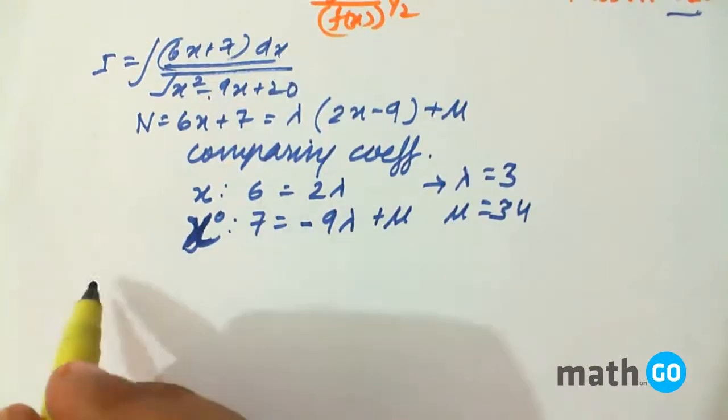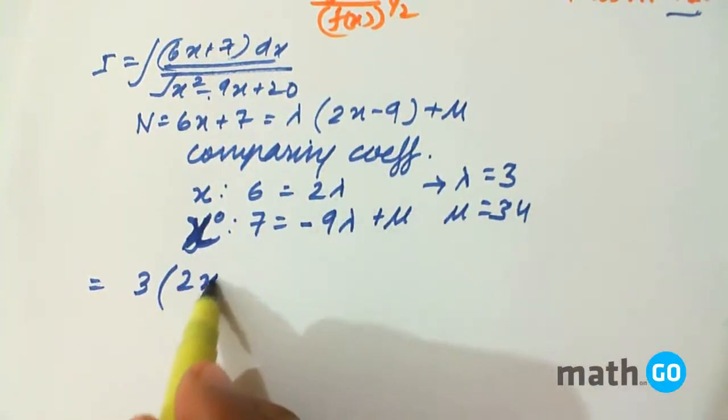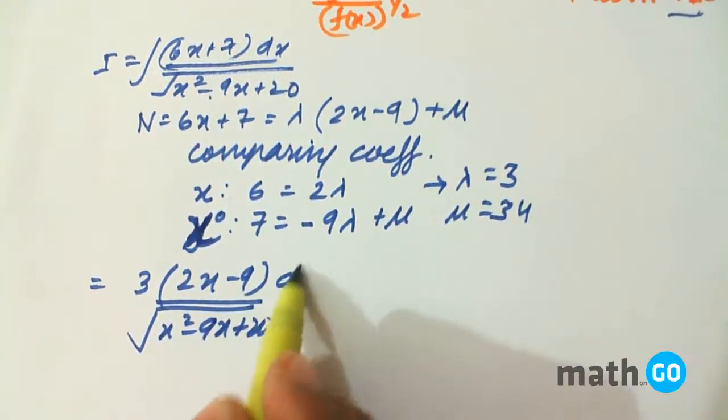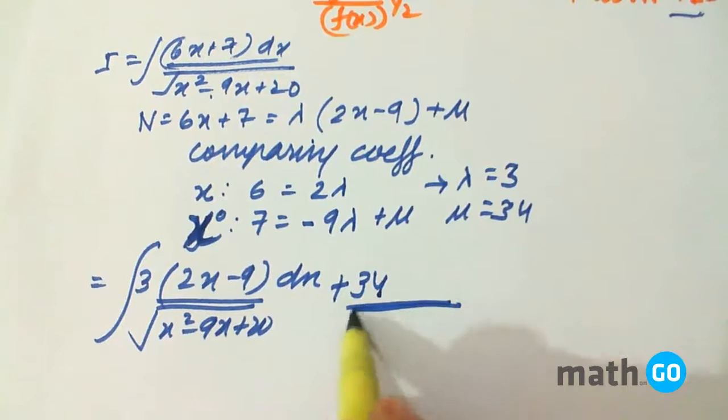If we put these values we get lambda that is 3 into derivative of this that is 2x minus 9 upon root of x square minus 9x plus 20 dx plus 34 into this expression.